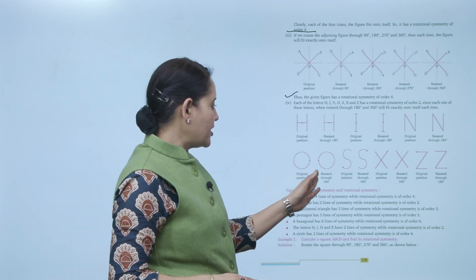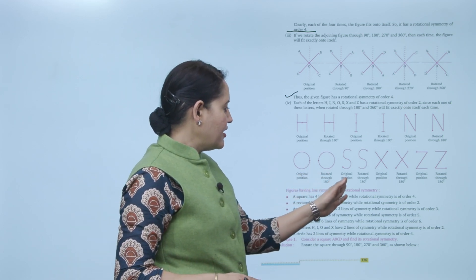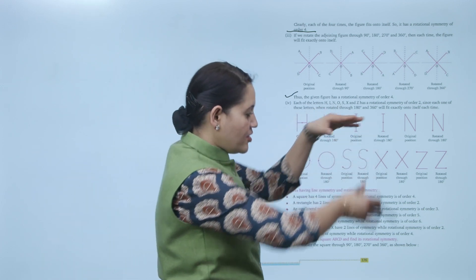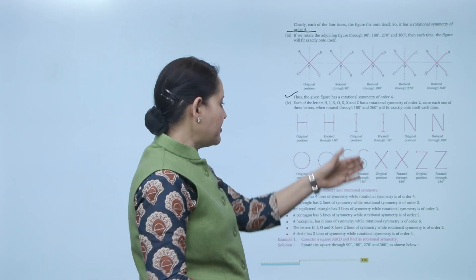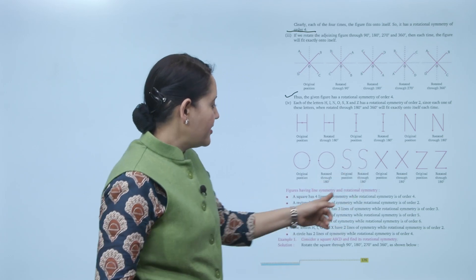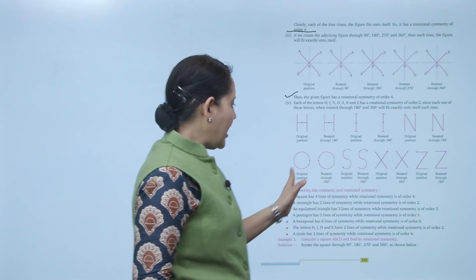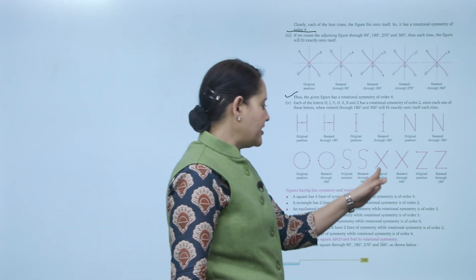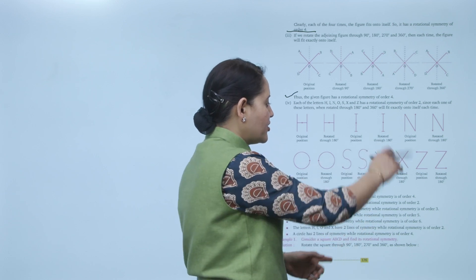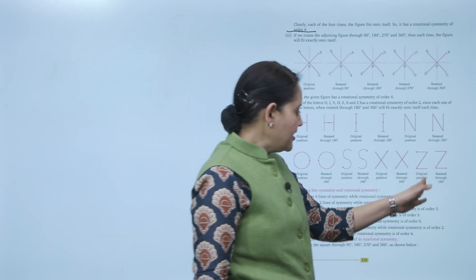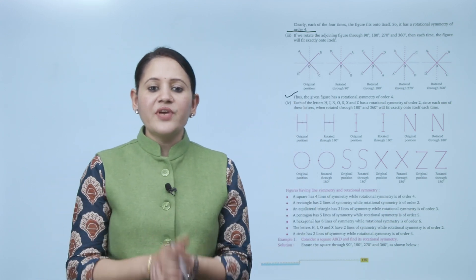Rotating these letters 180 degrees gives the same position as the original. This is the original position; now it rotates 180 degrees and the figure looks the same. So figures having this property have rotational symmetry of order 2.